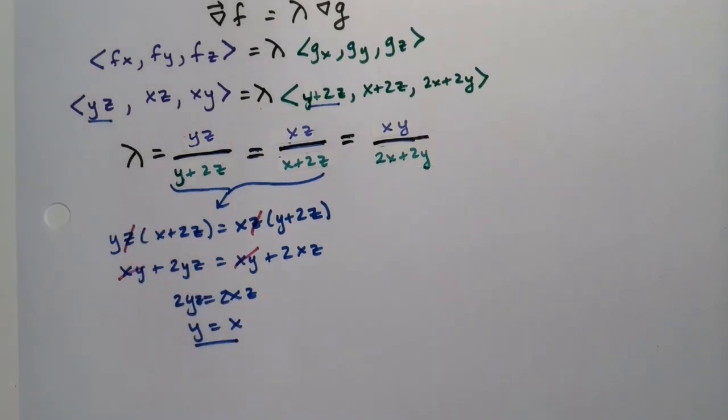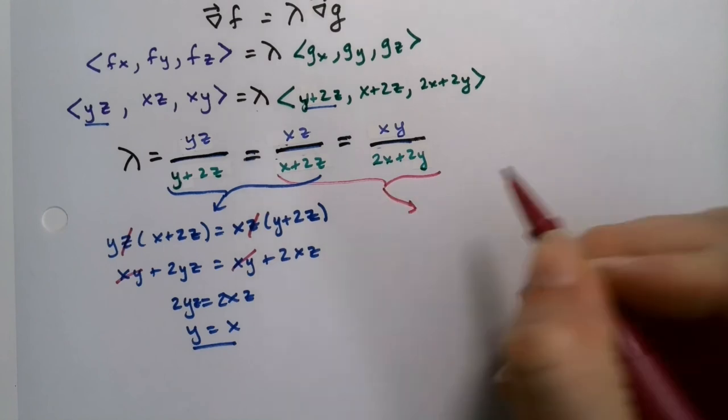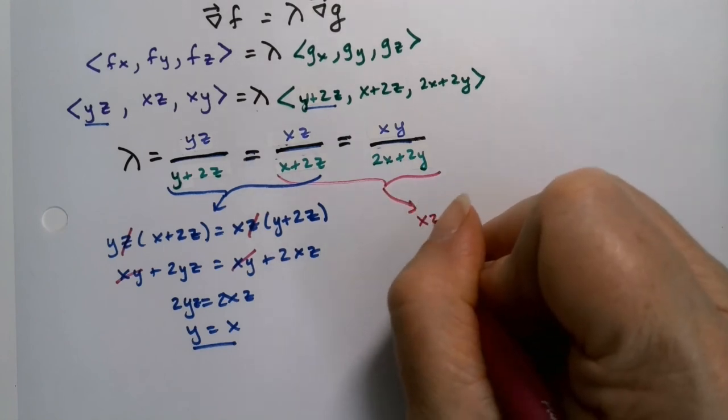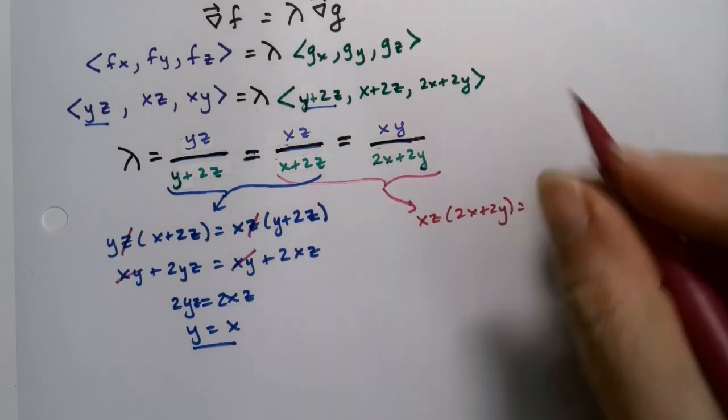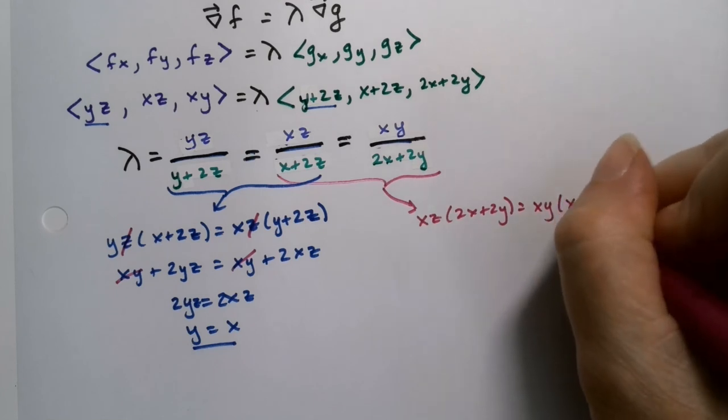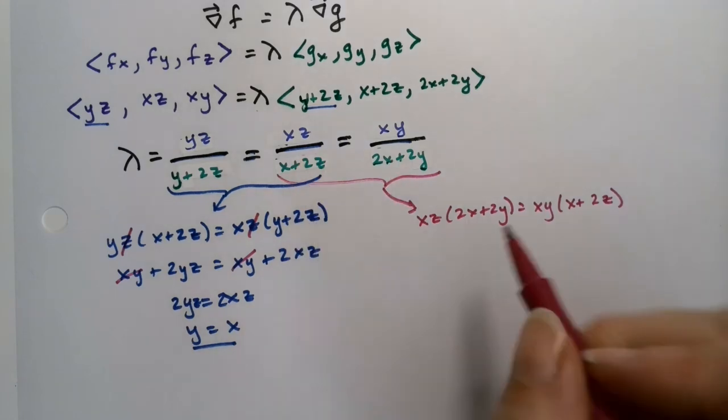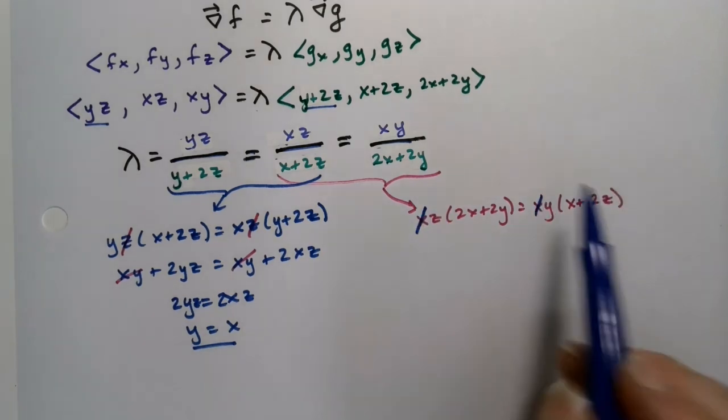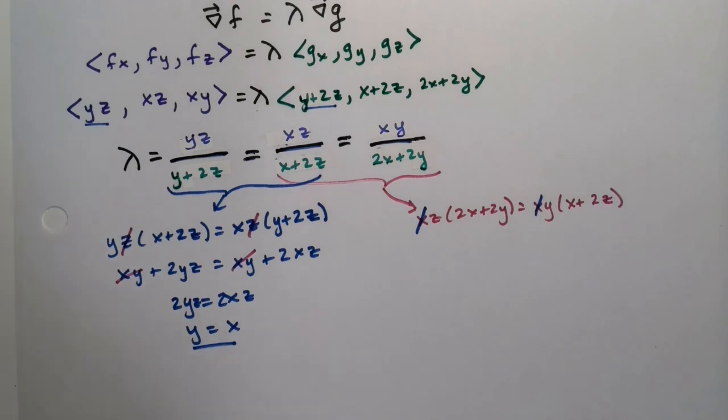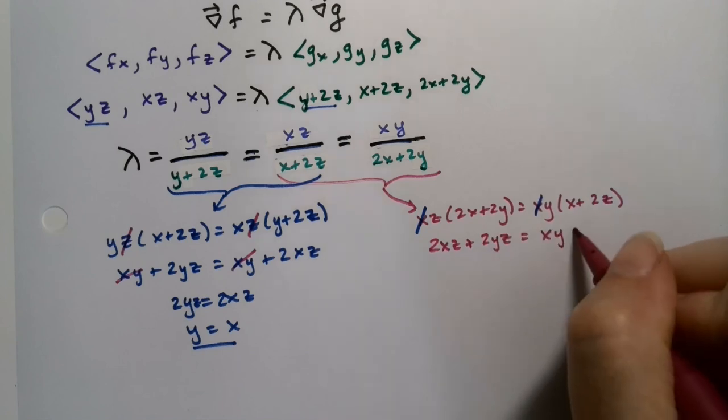Then let's do it again. Let's take a different combination. So I'm going to take these two now and say that means that xz times 2x plus 2y is equal to xy times x plus 2z. Just cross multiplication because they're proportions. Now, they both have x's in them. So I can just divide out x from both sides.